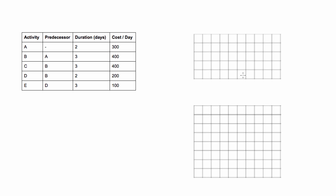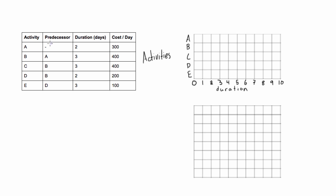In this video we're learning how to draw project S curves for cumulative costs of a project. First we'll need a Gantt chart, so let's set up the axes and fill in the bars. Activity A has no predecessor and it's two days long, so it starts at the beginning — from zero right up to the end of the second day.